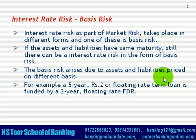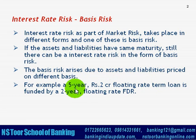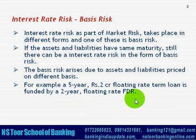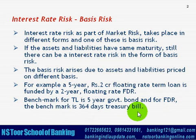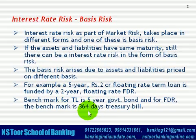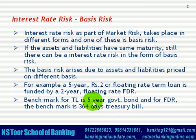Generally it happens in case of Floating Rate Interest Rates. For example, we have a term loan of Rs. 2 crore with a Floating Interest Rate with a Maturity Period of 5 years. This term loan is funded by a 2-year Floating Rate FDR. The benchmark for the term loan is the 5-year government bond and the benchmark for the FDR is the 364-day treasury bill. This means for the FDR the change will take place in interest rate when a change takes place in the 364-day treasury bill, and change in the term loan interest rate will take place when the yield from the 5-year government bond changes.